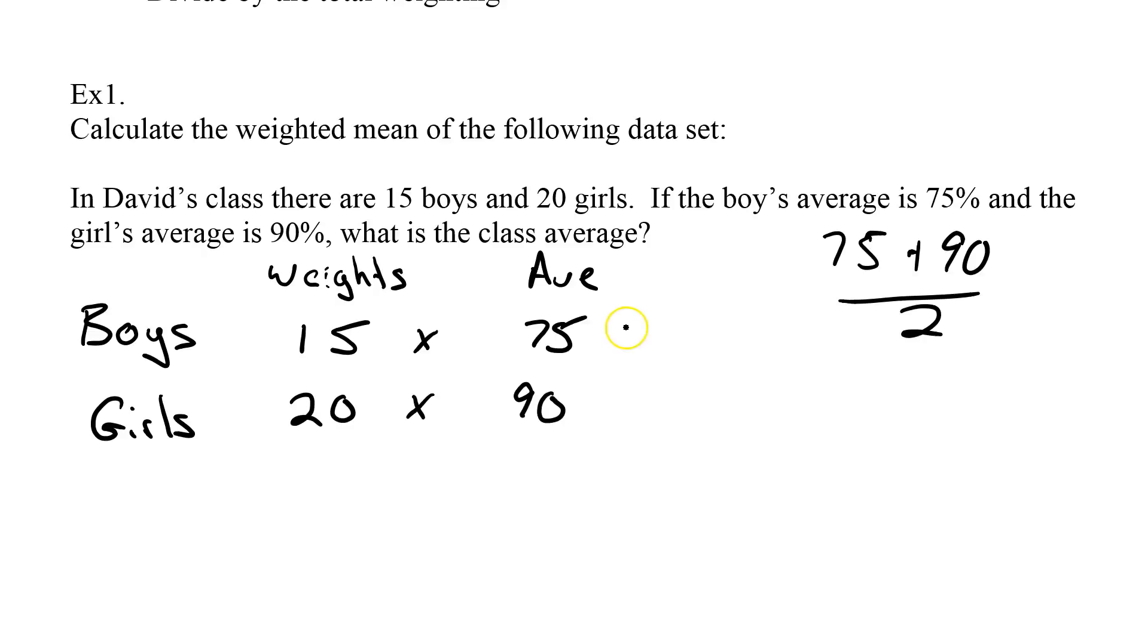So I can go pull up my trusty calculator and go 15 times 75. And I will get 1,125. I'm going to take the girls of 20 times it by their average of 90. And I should get 1,800. So step 1 was to take the weights and times it by the average. Done.